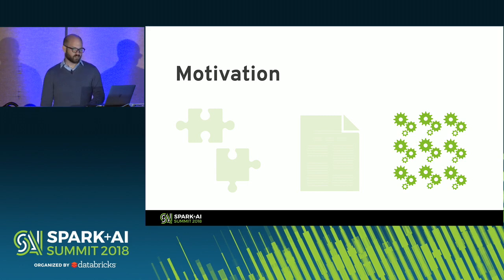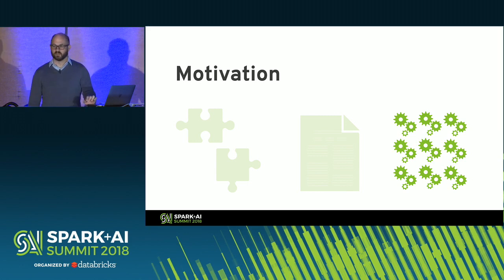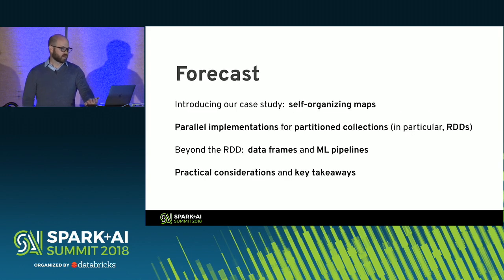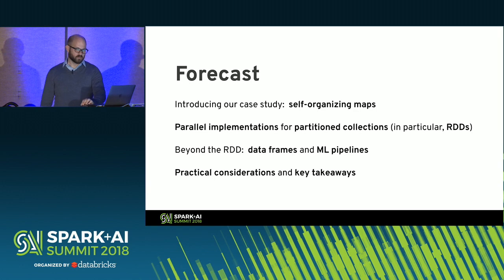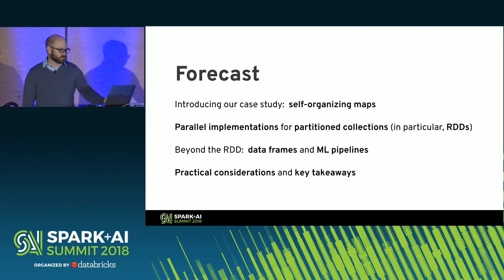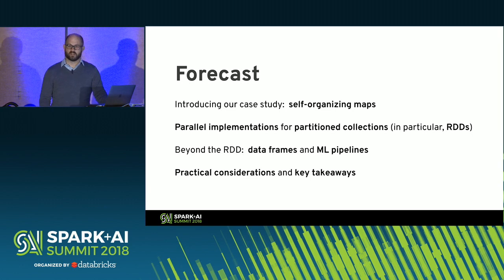As we saw this morning, Project Hydrogen is going to be super exciting for these use cases, but it's still nice to be able to extend Spark natively. A couple of years ago, I wanted to see if self-organizing maps would be a good technique for finding anomalies in infrastructure logs. They actually turned out to be, but in order to find that out, I had to implement self-organizing maps for Spark so that I could evaluate them against months' worth of log data from one of our data centers at work.